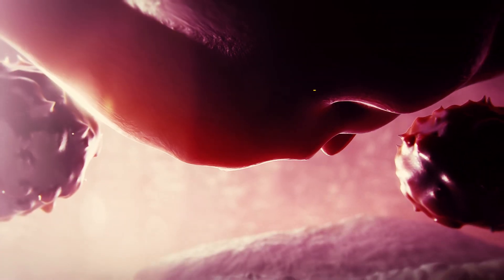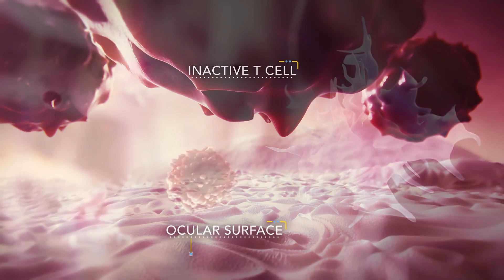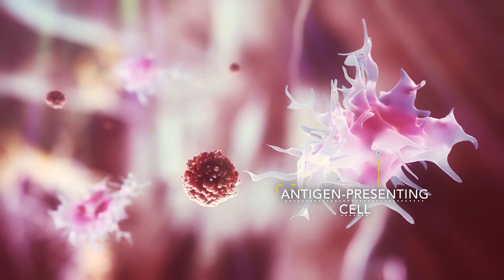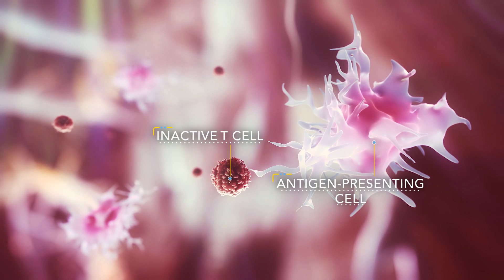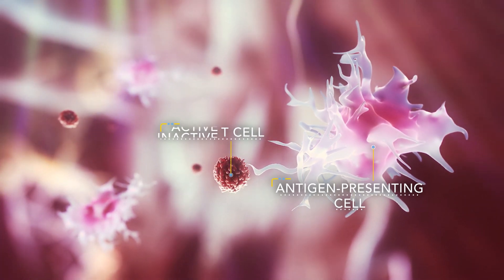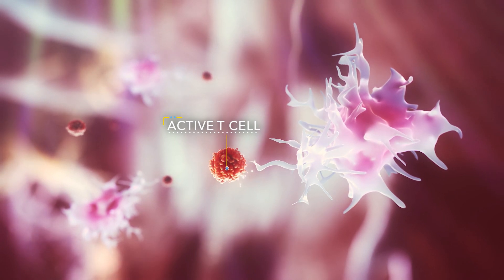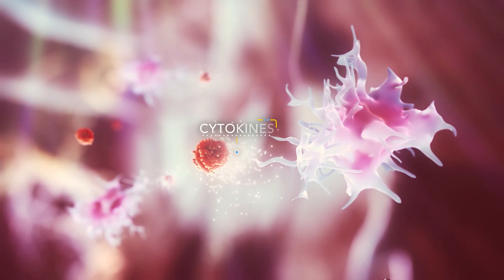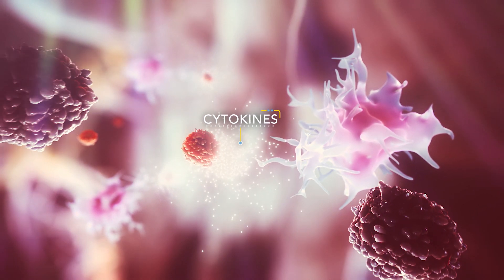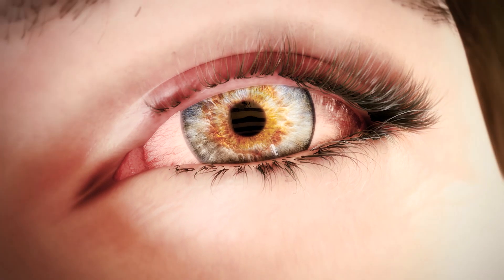Inactive T cells circulate freely monitoring for antigens and are key in inflammatory responses. Ocular surface stress can cause overexpression of inflammatory mediators, and in response, inactive T cells can be recruited and activated. These activated T cells release inflammatory cytokines which can further recruit and activate more inactive T cells, initiating and perpetuating the chronic inflammatory cycle.